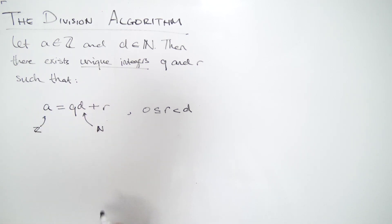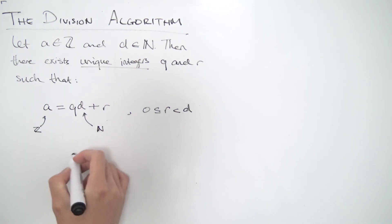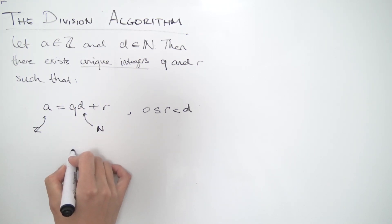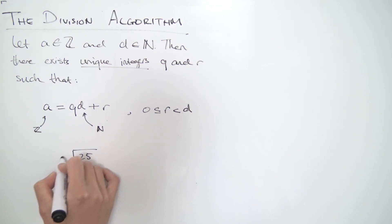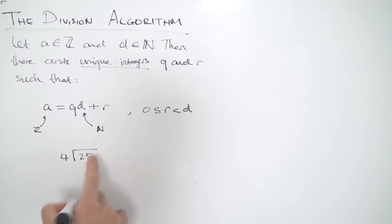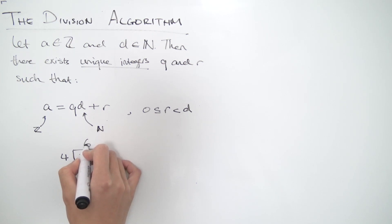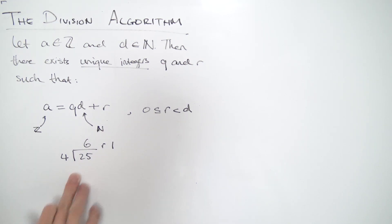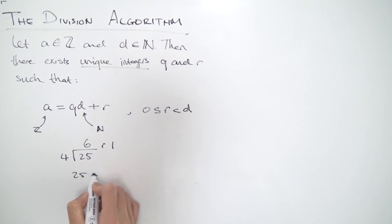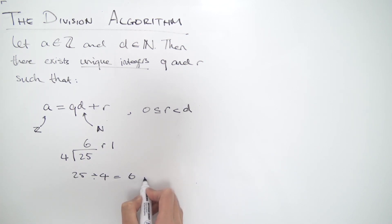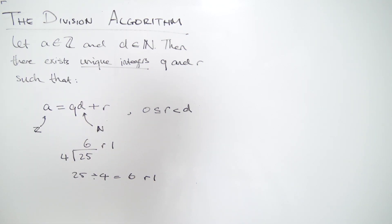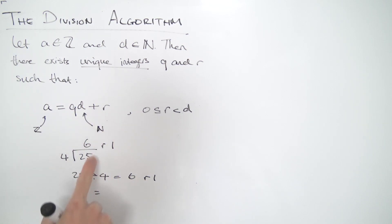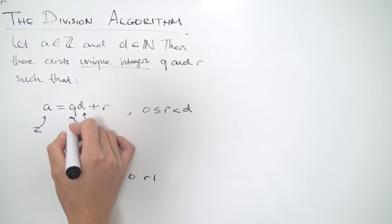You might recognize this expression from primary school. For example, take 25 and try to divide it by four — four goes into 25 six times, but then you have a remainder of one. So often in primary school, kids write 25 divided by four is equal to six remainder one. Or you could write it in this form as well — you could express 25 using this Q, which is actually the quotient. That's what Q stands for.